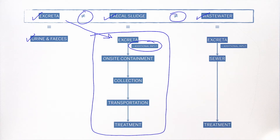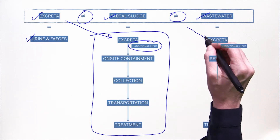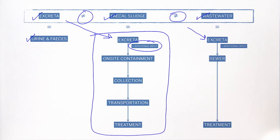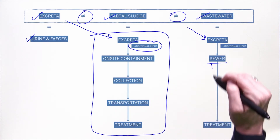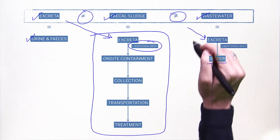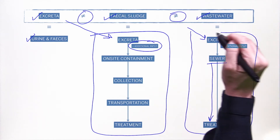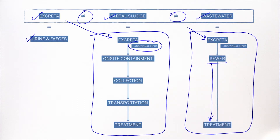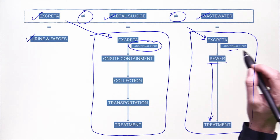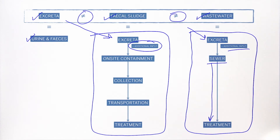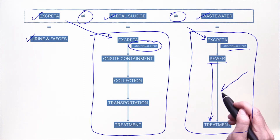Wastewater, on the other hand, also contains excreta, but it is transported via a flush toilet to a sewer, and then transported via sewer to a treatment plant. So wastewater and fecal sludge have entirely different service chains. In addition, wastewater contains less municipal solid waste or garbage, because it's difficult to flush in the toilet, and it can also include storm water management.